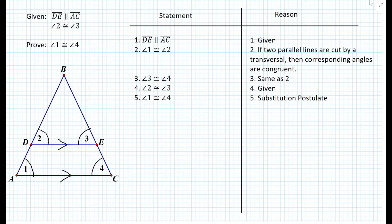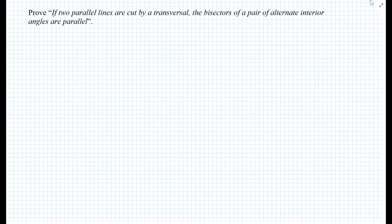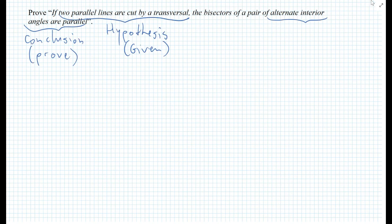Let's now look at another example that is slightly more involved. We want to prove: if two parallel lines are cut by a transversal, then the bisectors of a pair of alternate interior angles are parallel. We have to first think about what are the givens and what are we trying to prove, and maybe sketch a diagram. The hypothesis, our given, is that the two parallel lines are cut by a transversal, and we want to prove that the bisectors of those pairs of alternate interior angles are parallel.